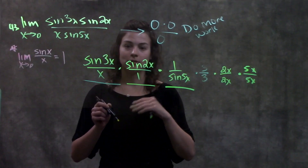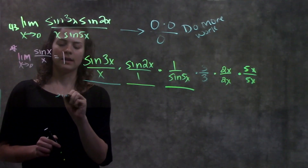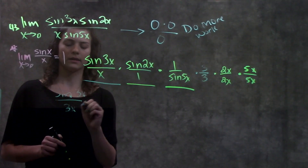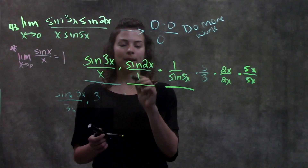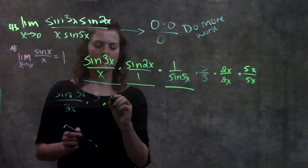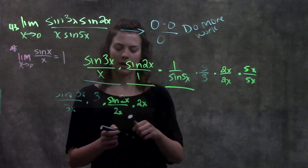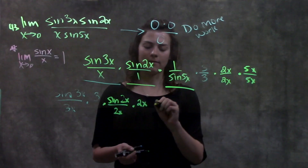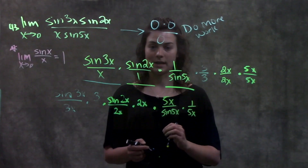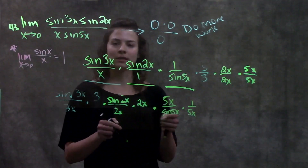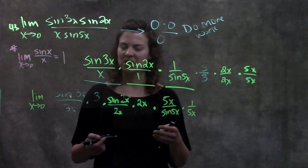From here I'm going to rearrange things so it's easier to see how each part matches our identity. For the first fraction I bring the three over: sine of three x over three x — and I still have a three in the denominator, so I write that there so we don't forget. For the second fraction I bring the two x over: sine two x over two x — and I still have a two x in the numerator, so I write that there to keep track. For the third fraction I bring the five x over: five x over sine five x — and I have a five x left over in the denominator. This whole problem is asking for the limit as x approaches zero of this function; we just rewrote it a little bit.